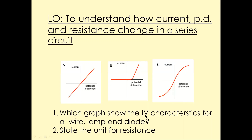IV means current and voltage — so a current and voltage graph, with current on the y-axis and the voltage or potential difference on the x-axis. This is your IV graph, and we're going to look at which shape represents a wire, a lamp, or a diode.